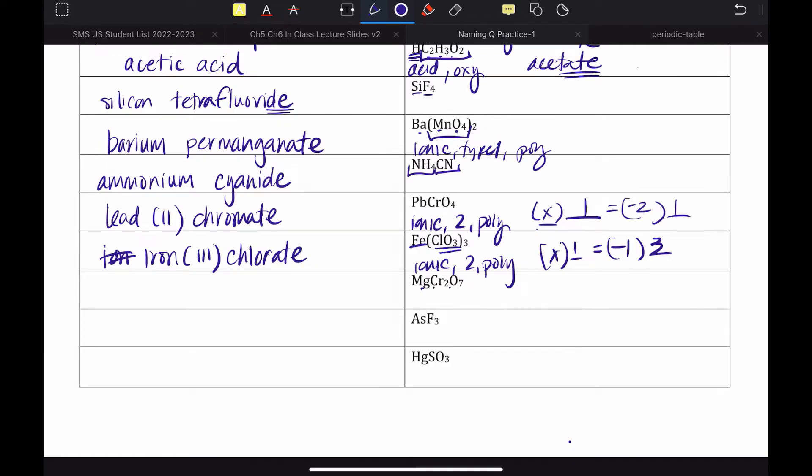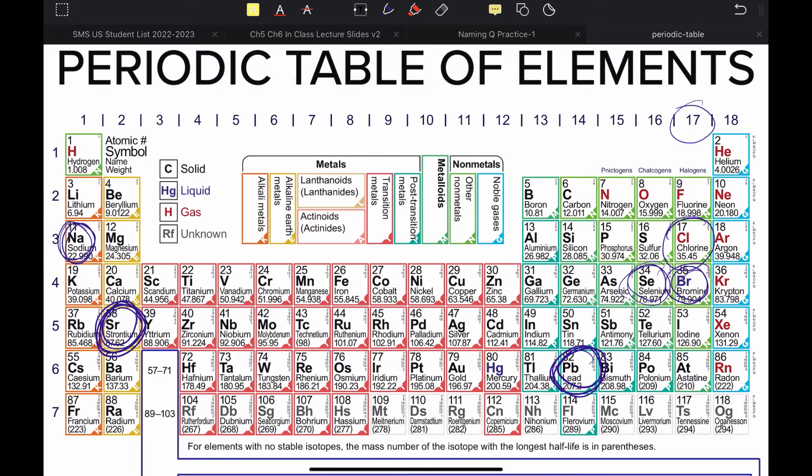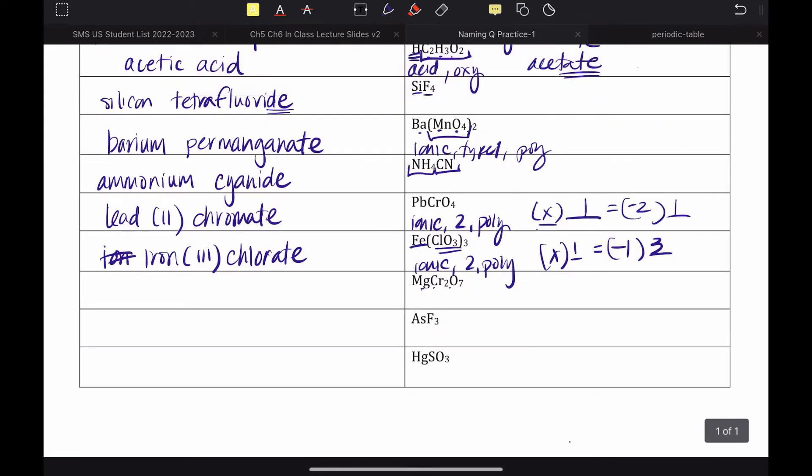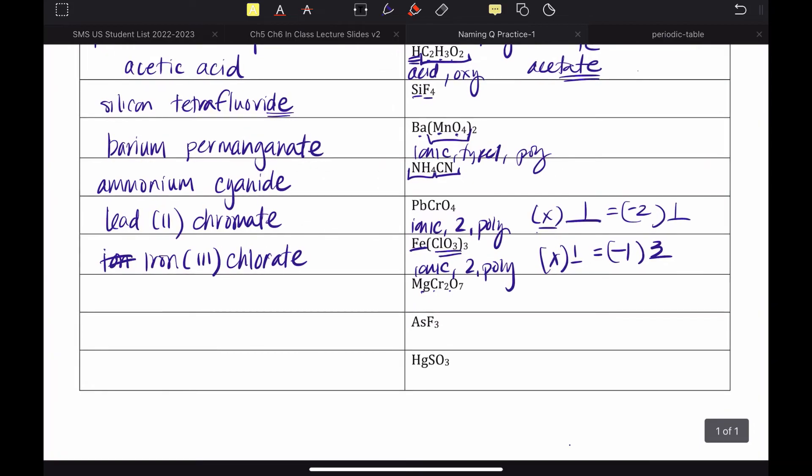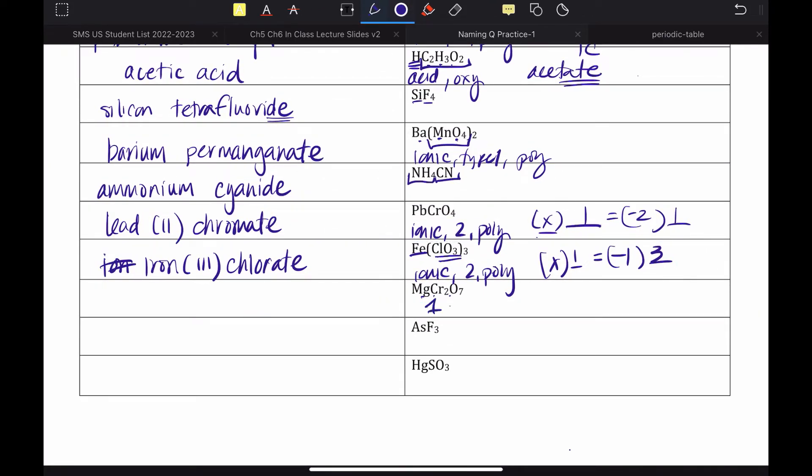Next up, we've got so many elements again. Probably contains a polyatomic ion. Probably ionic. We'd go find magnesium. Magnesium is in group 2. Since magnesium is in group 2, that means this is a type 1 compound. So, this is ionic type 1, poly. And so, this would be magnesium. And we would name that second part, which is dichromate.